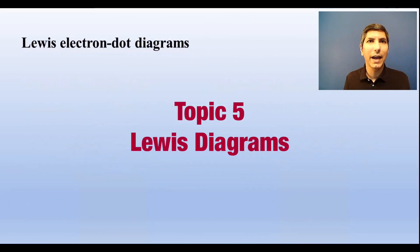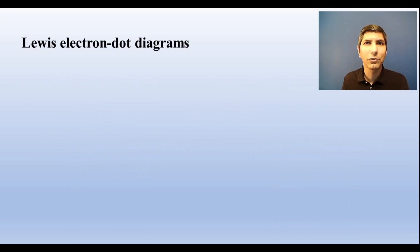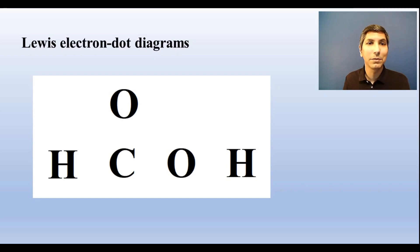Lewis electron dot diagrams are visual representations of the molecular structure of a molecule. So if you have this arrangement of atoms and are asked to put the dots in, I would recommend that you always start with the outside of the molecule and work your way in. So remember that hydrogen is stable with two valence electrons and the others are usually trying to have an octet. So hydrogen brings in one valence electron, so one for each of these.